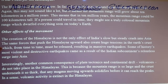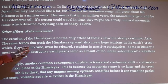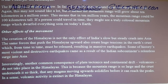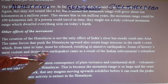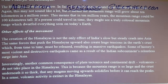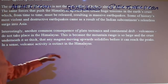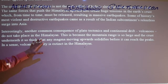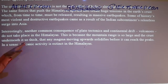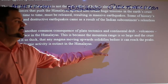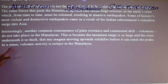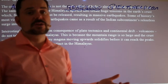Other effects of the movement: the creation of the Himalayas is not the only effect of India's slow but steady crash into Asia. The same forces that push the Himalayas upward also create huge tension in the earth's crust, which from time to time must be released, resulting in massive earthquakes. Some of history's most violent and destructive earthquakes came as a result of the Indian subcontinent's relentless surge into Asia. Interestingly, volcanoes do not take place in the Himalayas because the crust underneath is so thick that any magma moving upwards solidifies before it can reach the peaks — volcanic activity is effectively extinct in the Himalayas.